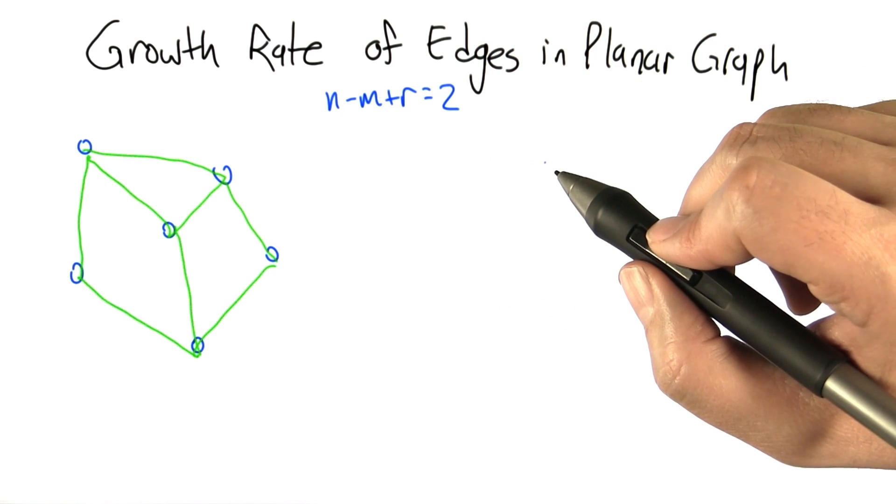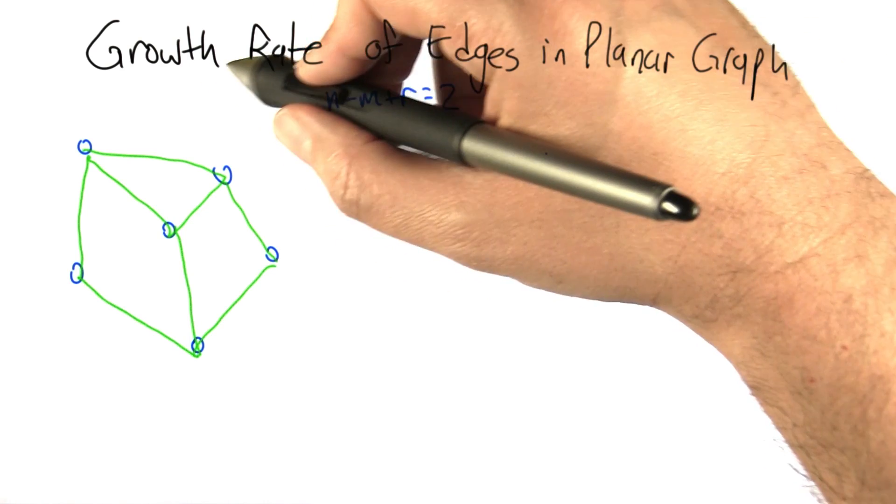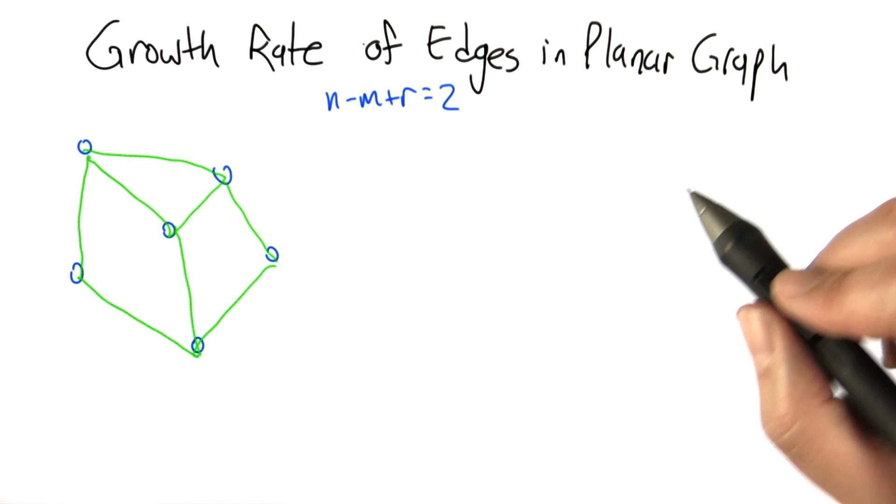So now we're going to use Euler's formula to give us a handle on how fast edges grow relative to the number of nodes in a planar graph.